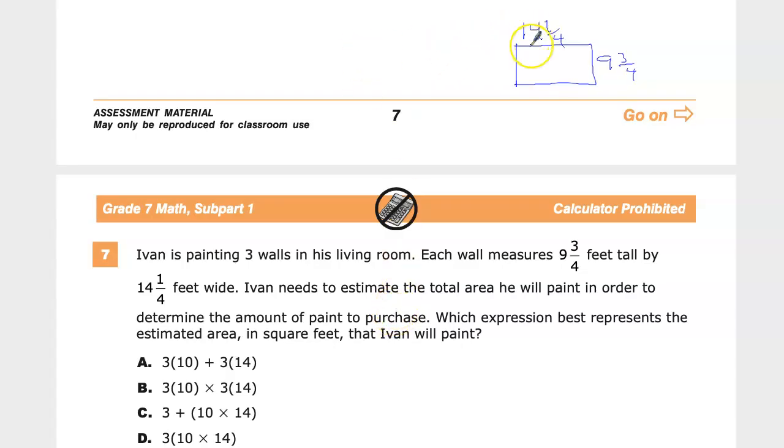So one thing that you should consider is that the area formula, because we have to cover all of it, is length times width. So it's something like 14¼ times 9¾.